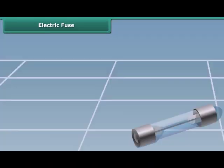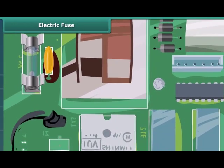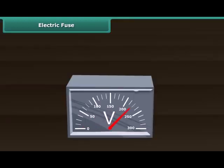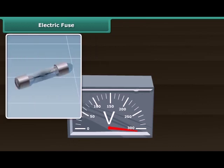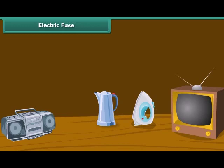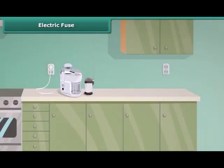A safety fuse is a device that protects an electric circuit. The heating effect of electricity is used in this case. When the current drawn is beyond a certain value, the fuse wire gets overheated, melts, and breaks the circuit. This prevents fire and damage to various electrical appliances. Fuses of different kinds are used for different purposes.